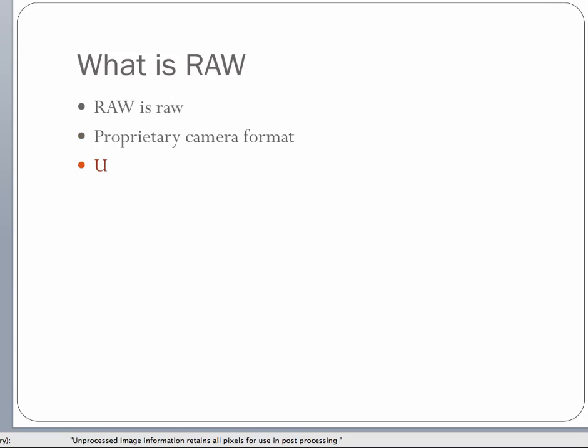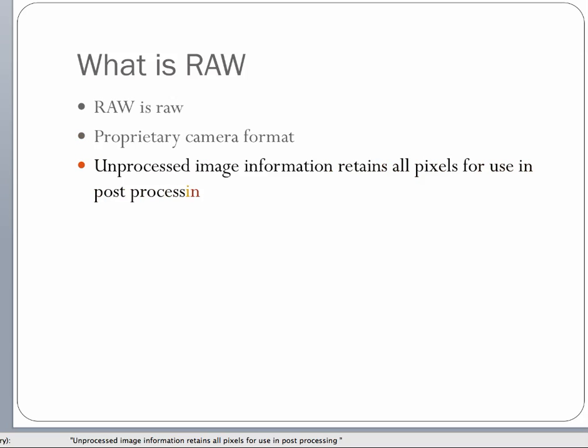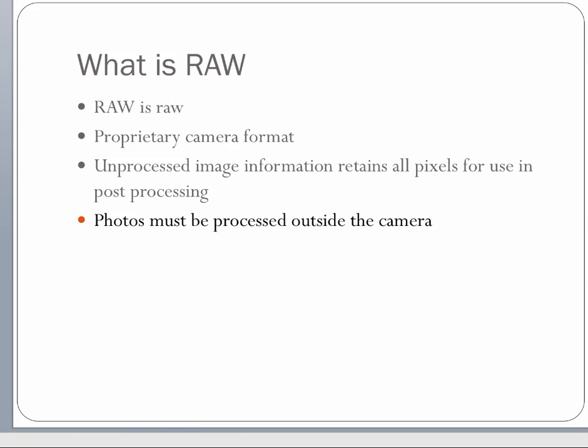In RAW, no pixels are lost — there is no compression. So when you take a picture, all the information comes from your camera to the computer for post-processing. All photos must be processed outside the camera. You cannot print a RAW image at Wolf Camera or Walgreens — those images have to be processed, and usually that's going to be on your computer.